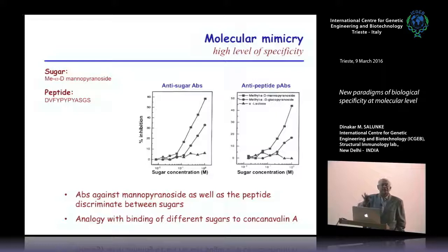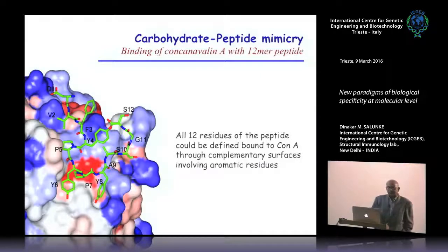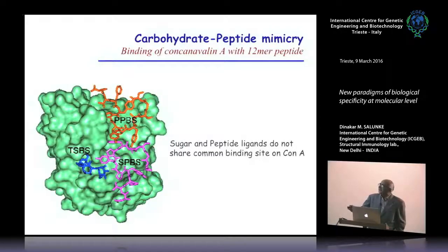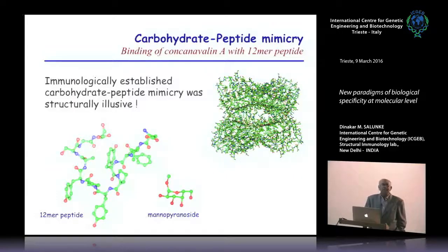So if we go by that, the sugar and peptide here must actually be topologically equivalent. We went and determined the structure of the peptide — the sugar had been determined earlier — and this is the three-dimensional structure of sugar bound to concanavalin A. The setback was that the peptide bound somewhere else, not at the sugar binding site, which did not allow us to compare the interactions of peptide and sugar. We tried to address this computationally but were not able to establish a topological relationship.